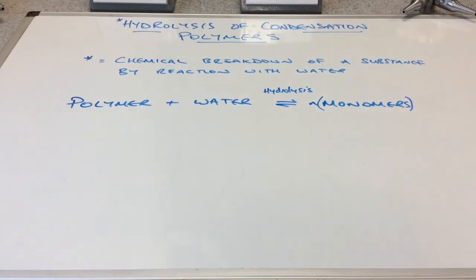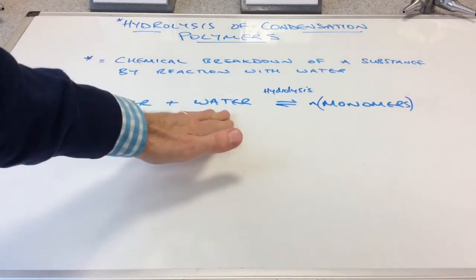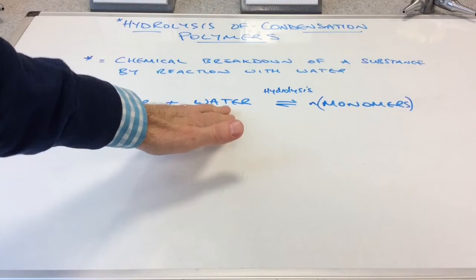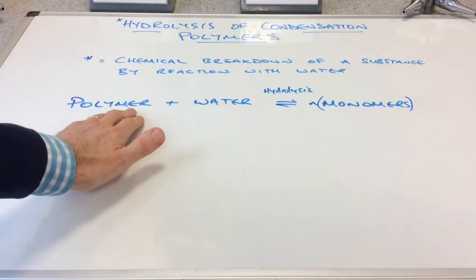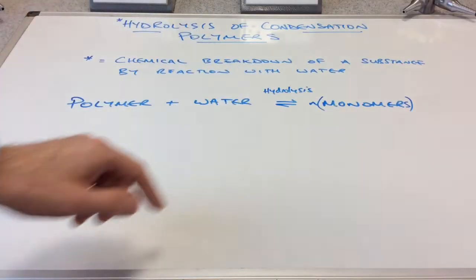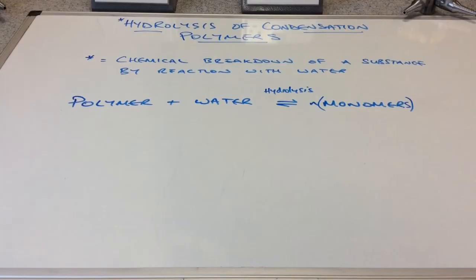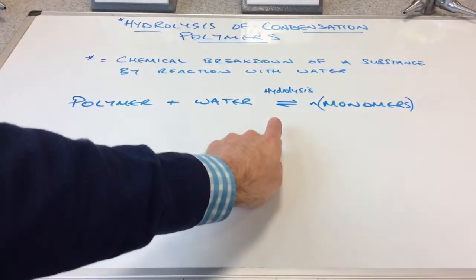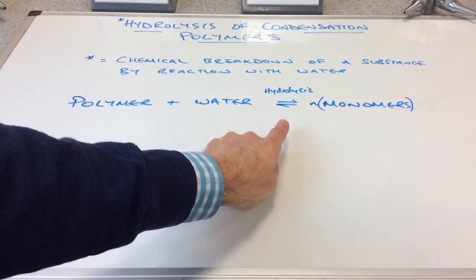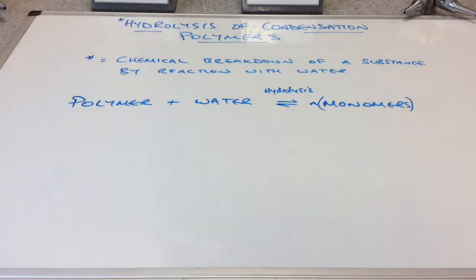We can represent that with a simple word equation. If you take a condensation polymer and react it with water, the water will break the polymer and reform the monomers that the polymer was originally made from. Going forwards, this is the hydrolysis process.